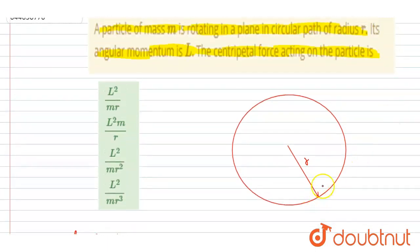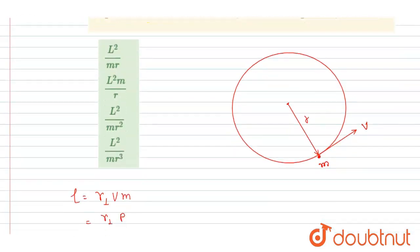At any instant, the velocity will be directed perpendicular to the radius vector like this. Mass of the particle is M, and the perpendicular distance of the line of motion will be at a distance R from point O.